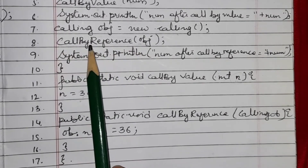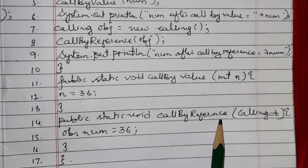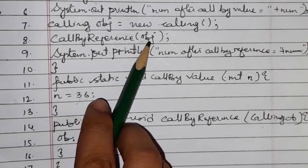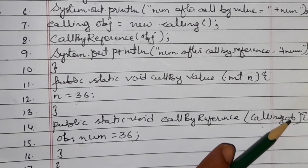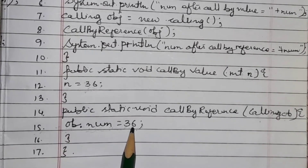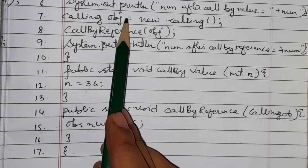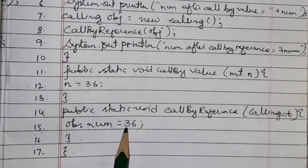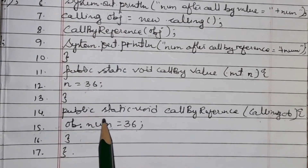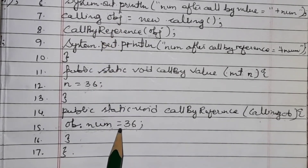As soon as you call 'callByReference(obj)', the program goes to 'public static void callByReference(Calling ob)'. The object passed is received by the variable 'ob'. Then at line 15, 'ob.num = 36' — the 'num' variable inside the object is changed to 36. Since it is a non-primitive data type, the original value of 'num' within the object is changed to 36.